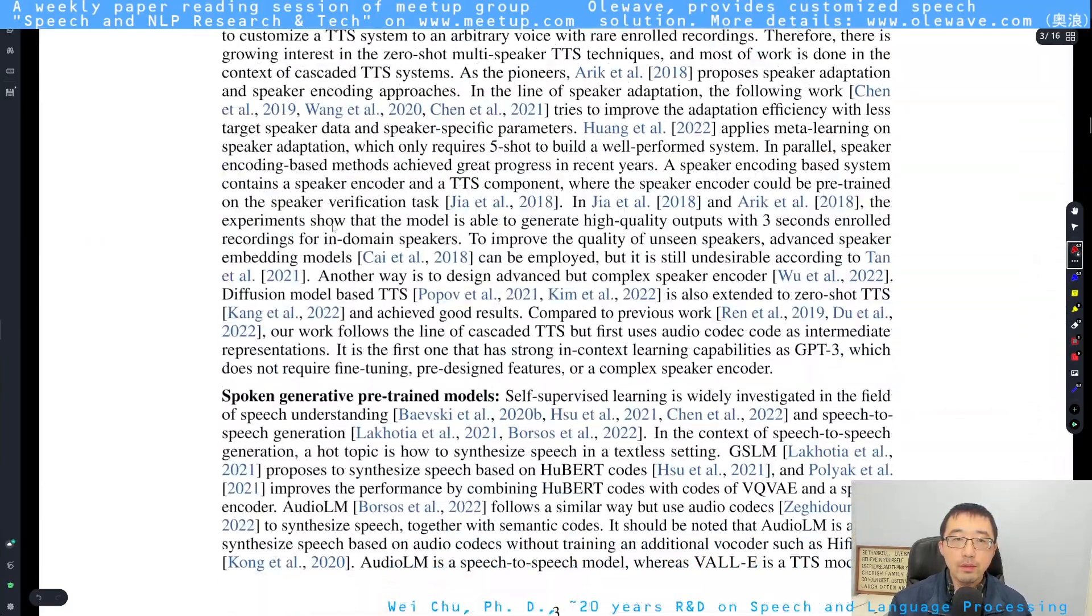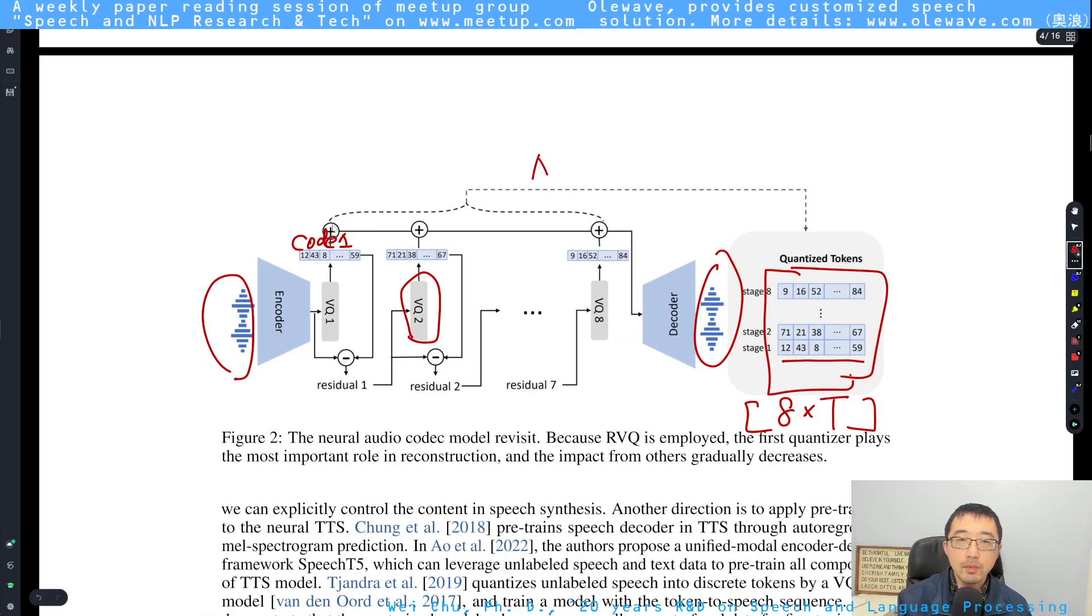Talking about the method, first of all, they used existing published work called Audio LM, which uses the residual vector quantization method. You can see that this is unsupervised training. You don't have to have TTS labels. The clean speech as input and also the same clean speech serves as the target in the loss function. In each layer, the VQ would take the residual from the previous layer as input and output residual to the next layer. And you can see that the code output from each layer would be stacked into a final code tensor. The tensor size is 8 by T, where T is the length of the encoded speech.